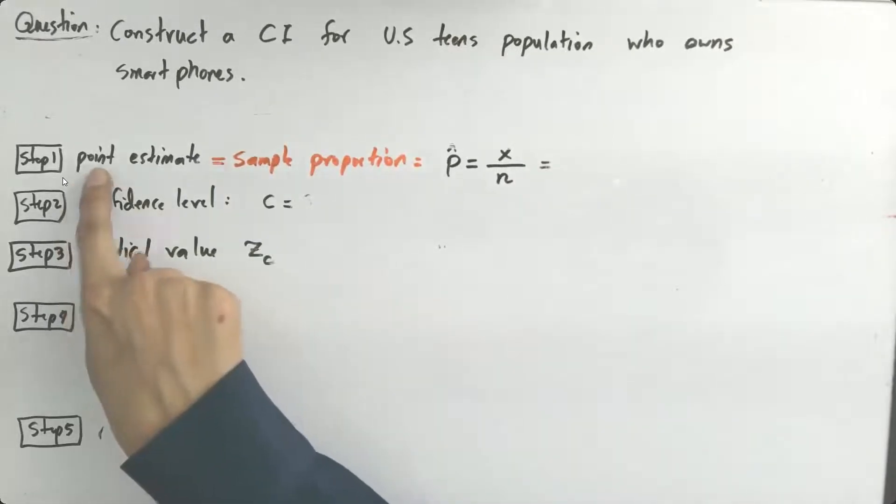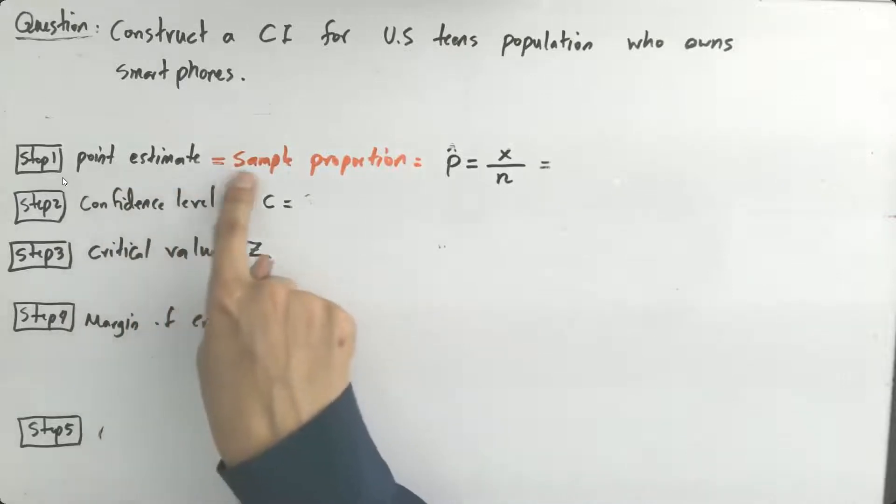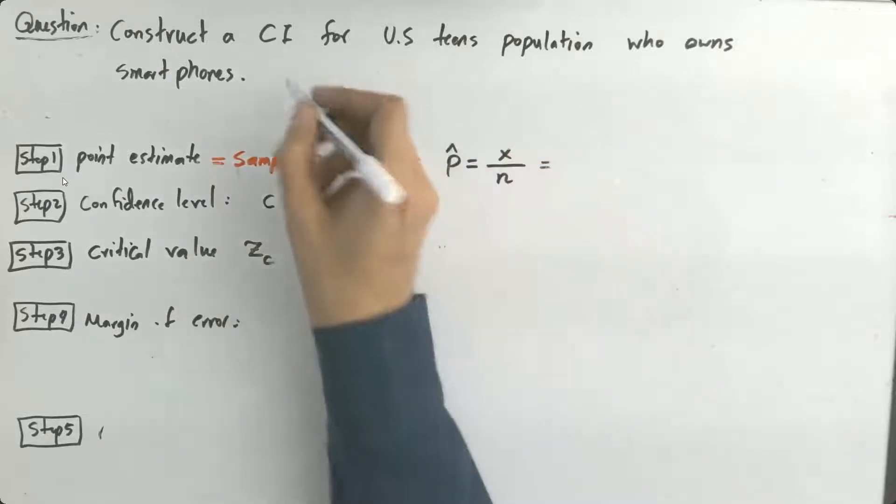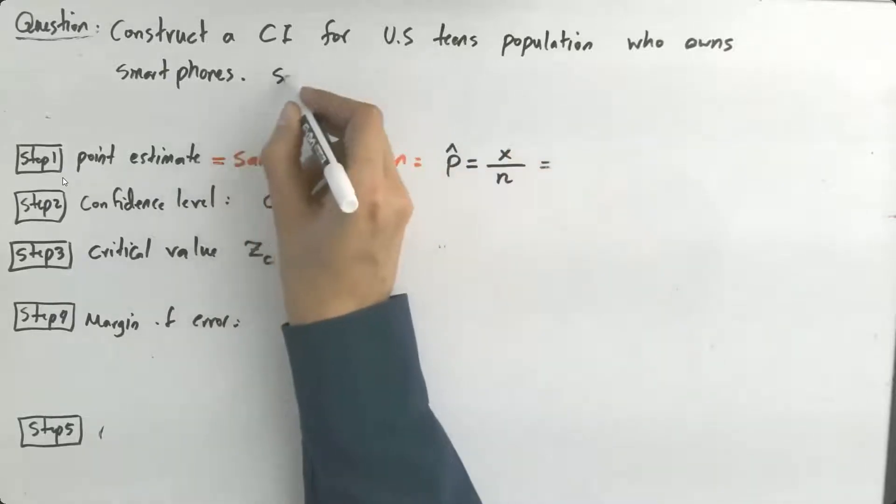In the very first step, we're going to find the point estimate, which is the sample proportion. What we did, we surveyed, we surveyed